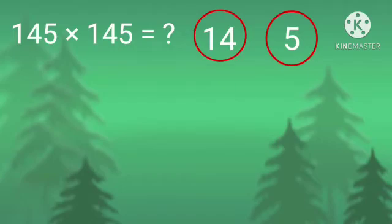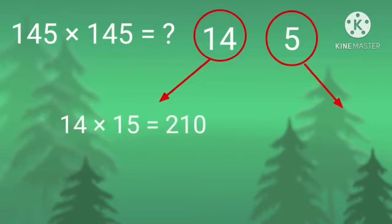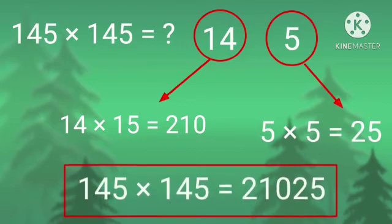Multiply 14 by its successor 15. So 14 multiplied by 15 is 210. Multiply 5 by itself. So 5 multiplied by 5 is 25. So the answer is 21,025.